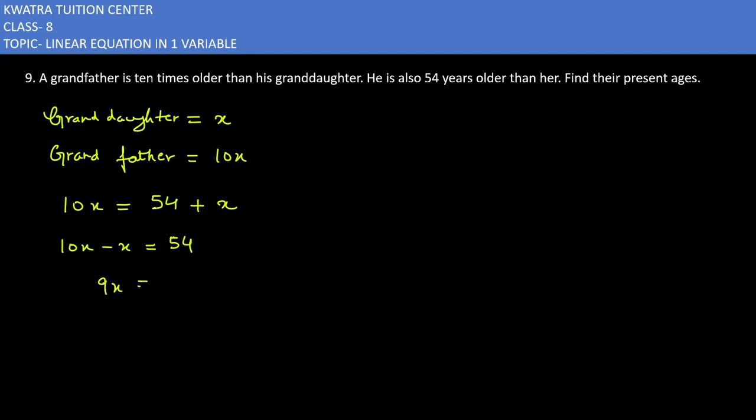10x minus x is 9x. 9x is equal to 54. How do we do the next step? 54 over 9.